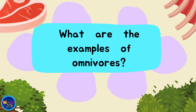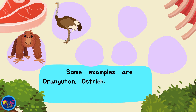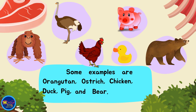What are the examples of omnivores? Some examples are orangutan, ostrich, chicken, duck, pig, and bear.